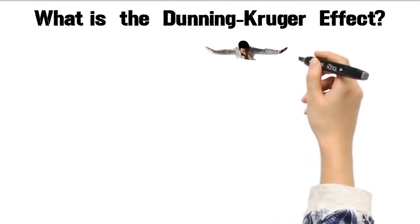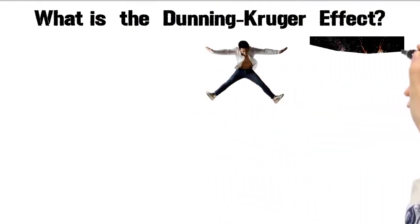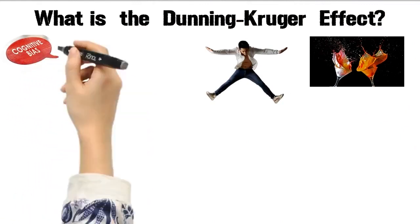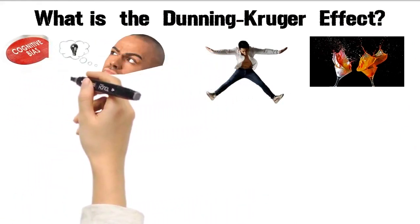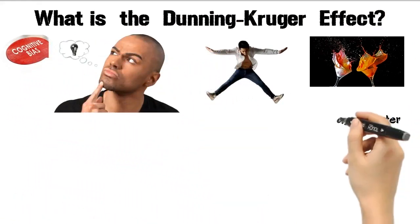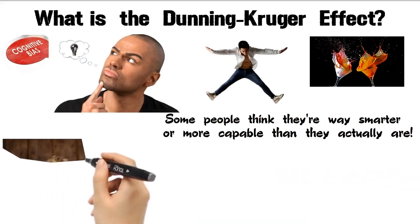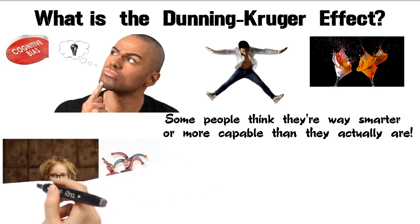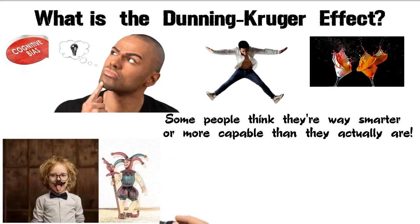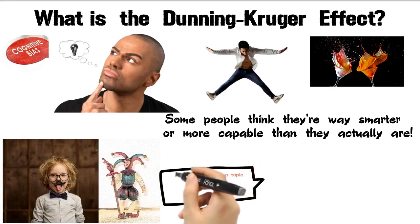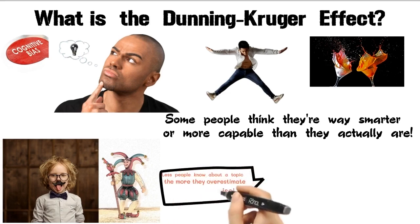What in the world is the Dunning-Kruger Effect? It's not a new dance move or a funny cocktail. It's a cognitive bias that explains why some people think they are way smarter or more capable than they actually are. I'm sure you've met these kind of people. It's a hilarious phenomenon where people think they are Einstein when they actually are, well, the village fool. Picture this: the less you know about a topic, the more likely you are to overestimate your expertise in it.